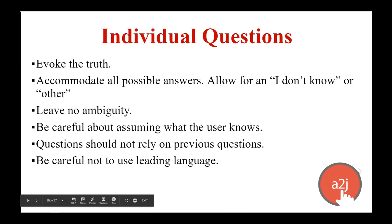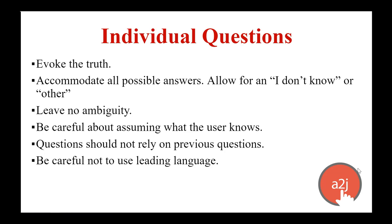With individual questions, you want to script them in a way that evokes the truth, accommodates all possible answers, allows for an 'I don't know' or an 'other,' makes sure not to make any questions ambiguous, and is careful about assuming what a user would know. Just because you would know what county you live in doesn't necessarily mean someone filling this out on a court kiosk, stressed and late for their court date, would know that. Add in anything you can to make it easier — county lookups on your state website, postal code lookups on usps.gov. Questions should not rely on previous questions; if you need to rely on a previous question, use a macro to remind the end user. We'll talk about macros in video 3. And always be careful not to use leading language when asking questions.